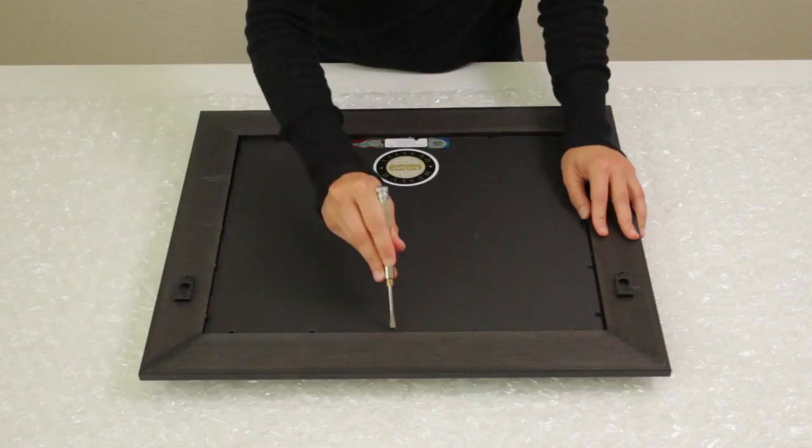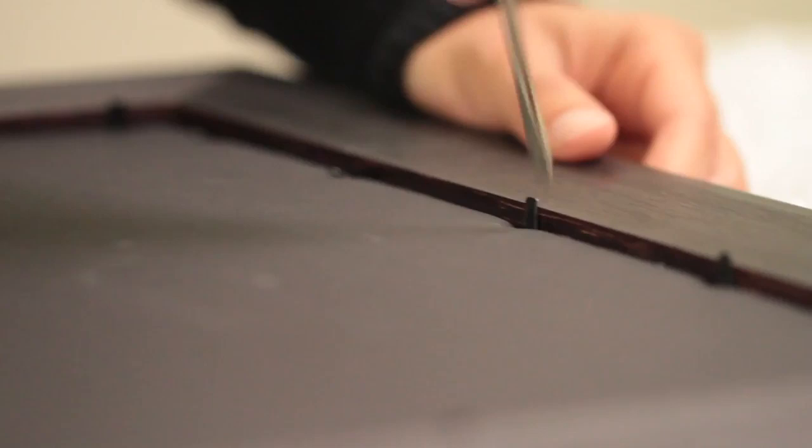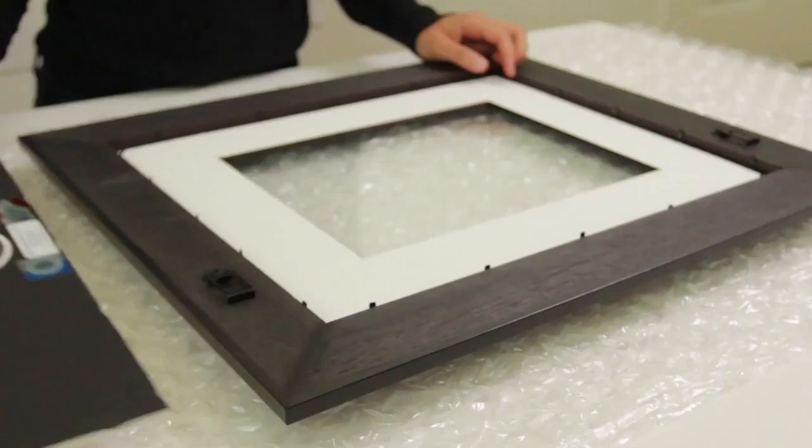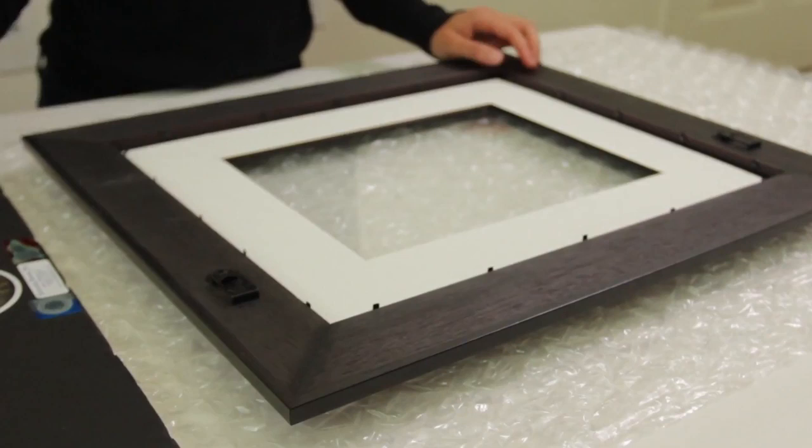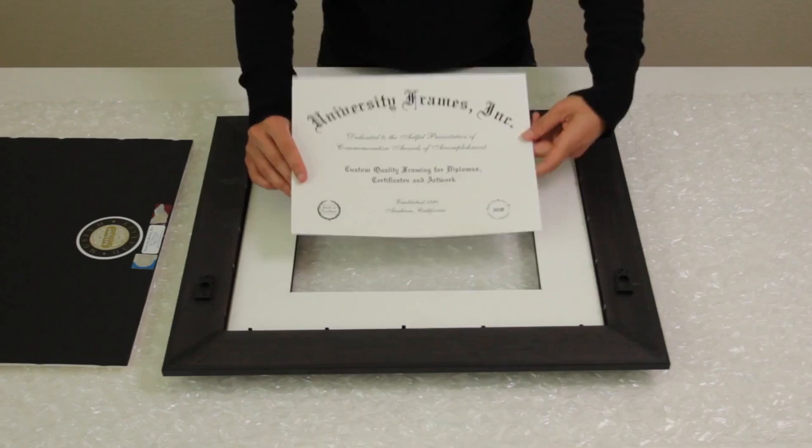Next, bend back the flexible black tabs to remove the acid-free mounting board. Using a flathead screwdriver will make it much easier than using your fingernails. Once all the tabs are bent back, remove the mounting board, but be sure to leave the cutout matte board within the frame.